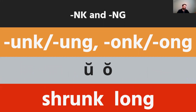With U-N-K, U-N-G, O-N-K, and O-N-G combinations, there's no problem — these make the vowel sounds we would predict following phonetic skill two: a short U and a short O. So a word like 'shrunk' makes the sound we'd expect, and the word 'long' makes the sound we'd expect. No problems with O or U in these combinations.